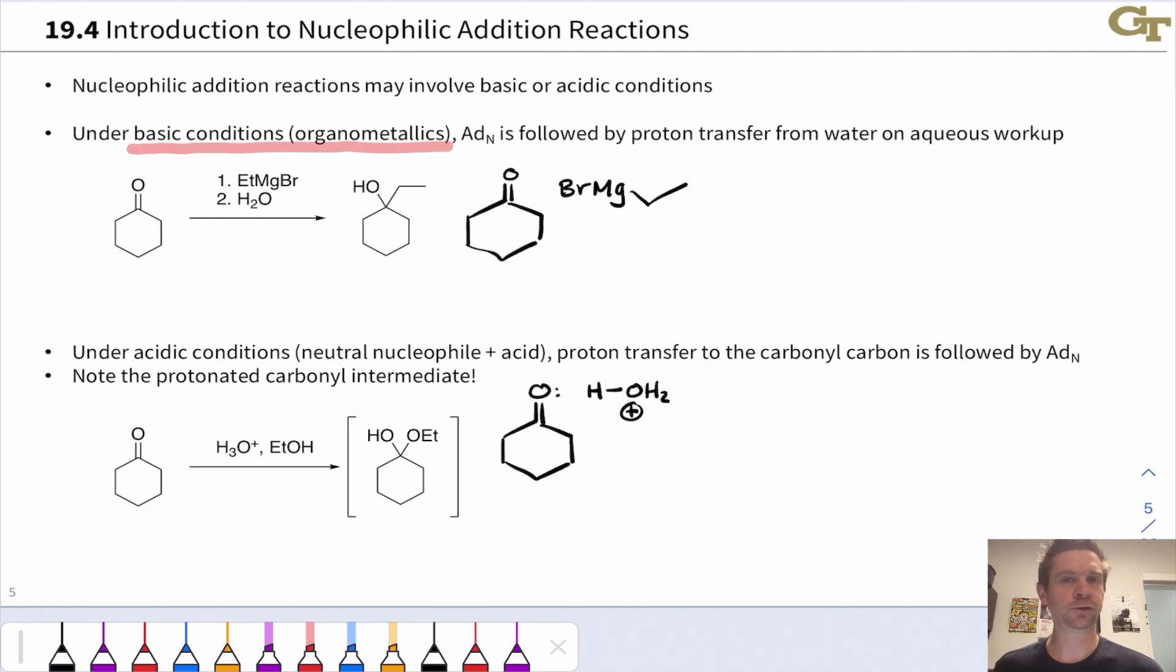Under these conditions, nucleophilic addition occurs directly to the neutral carbonyl group. For example, when a Grignard reagent is used, we can think of this as essentially ethyl anion, and that anion can add to the carbonyl carbon to give an alkoxide intermediate. This is heavily favored because we're essentially shifting negative charge from a carbon to an oxygen in this step.